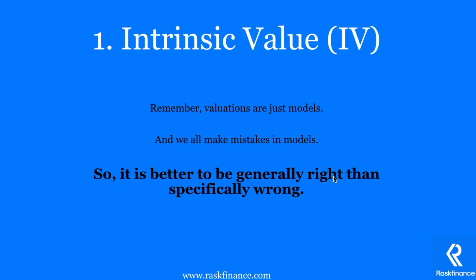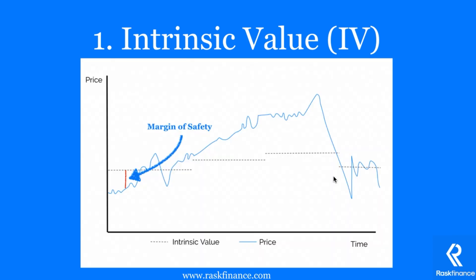One way we can adjust for the difference between price and value — and for us potentially being wrong — is a concept called the margin of safety, also called the margin of error. This is the difference between our calculated value and the market price, shown here with the red line. It's also known as the margin for error because it adjusts for mistakes in our research and valuation.